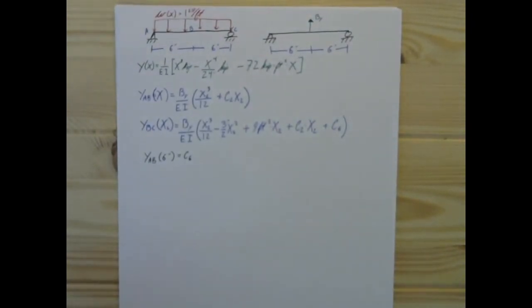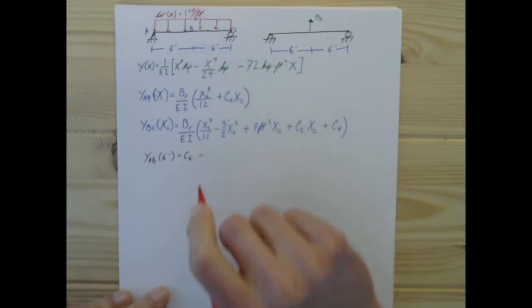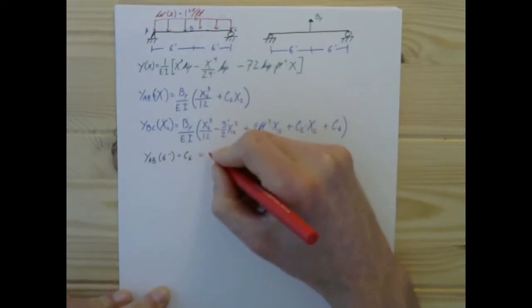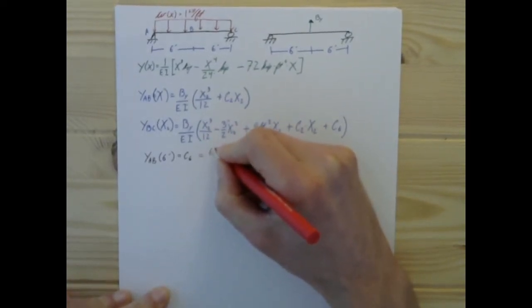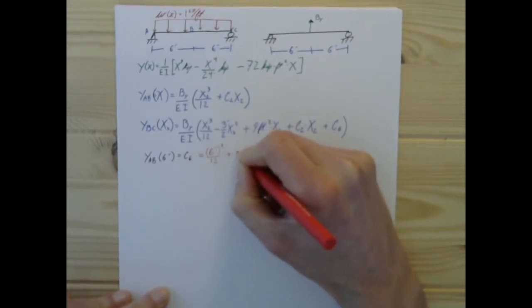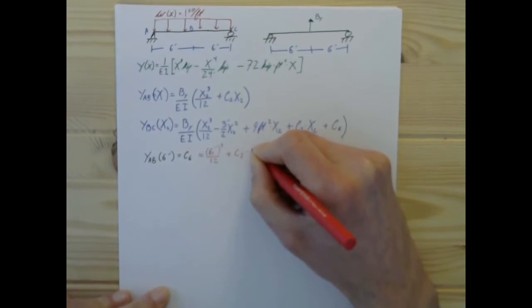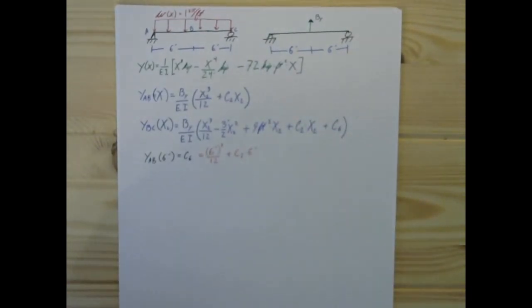And I meant to write that in red. So, let's just go ahead and say that that is 6 feet cubed over 12 plus C2 times 6 feet. I don't think there's any real need to simplify that any further, to be honest.